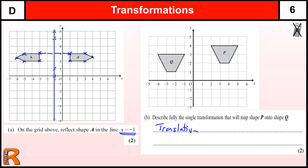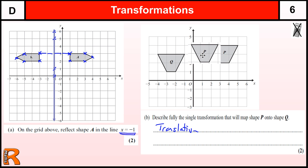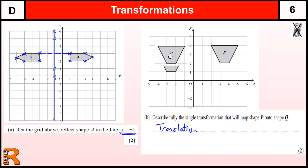If we take a point on P - say the top corner - and work out how many places it's moved to get to the corresponding point on Q, we can describe the translation properly. We move it one, two, three, four, five, six to the left, then it needs to come down one space. So it's gone six to the left and down one.